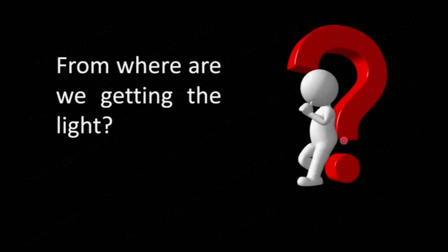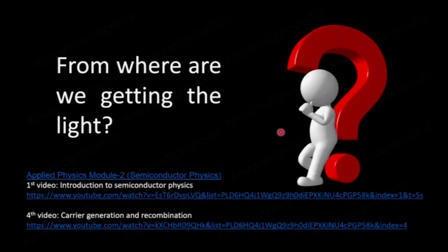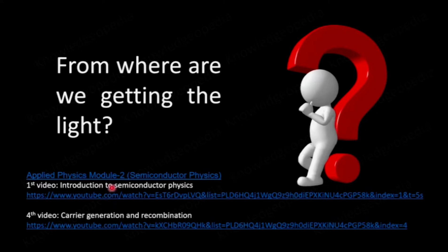To understand the concept I am going to discuss today, it is better that you go through two videos: the first on introduction to semiconductor physics, and the fourth video in which I discussed carrier generation and recombination. These are in the playlist under applied physics module 2, semiconductor physics, designed for unit 2 of your syllabus. It will be good if you go through these two videos before watching this one, though you can watch it directly if you don't have time.